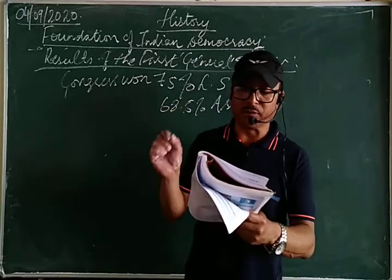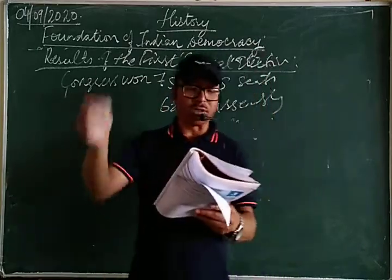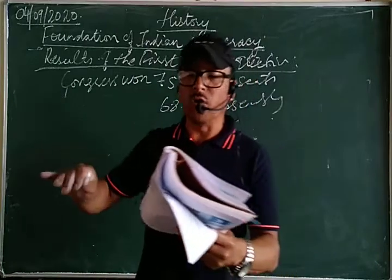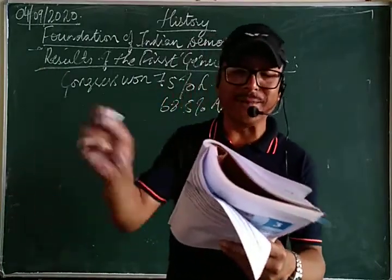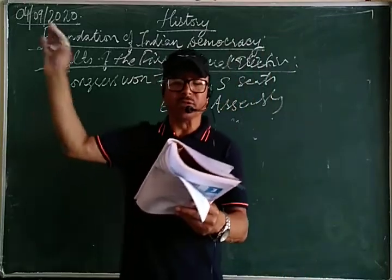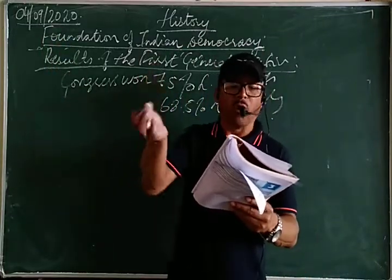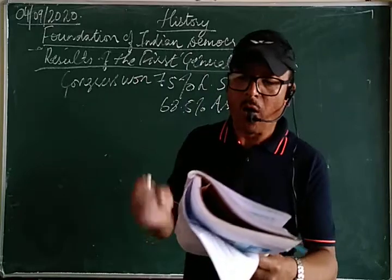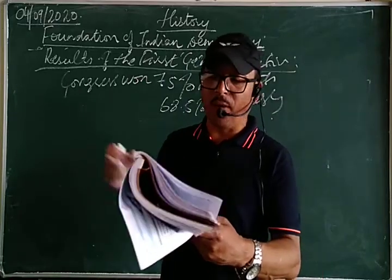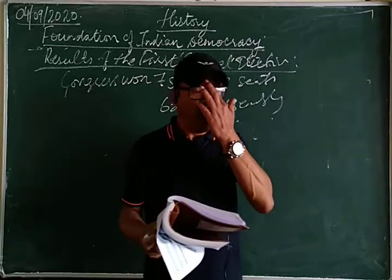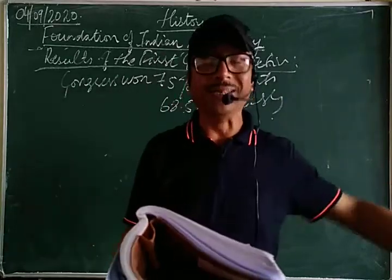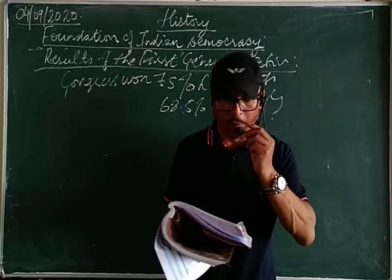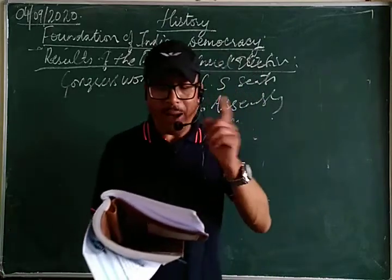Congress had absolute majority in most of the states, excluding Madras, Travancore-Cochin, Odisha, PEPSU (Patiala and East Punjab States Union). In other states Congress got absolute majority and formed the government. In some states, Congress made an alliance with smaller parties and independent candidates and formed coalition governments.